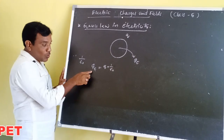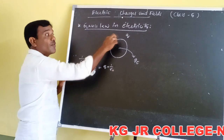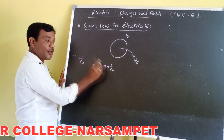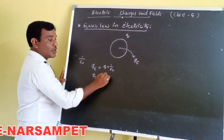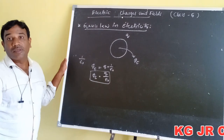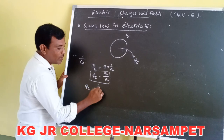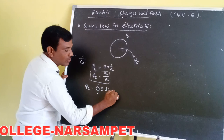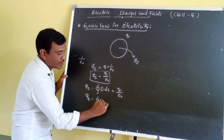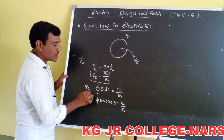The total electric flux passing through a closed surface is equal to (1/ε₀) times the net charge of the enclosed surface — this is Gauss's Law. The equation is: φ = Q/ε₀, where ε₀ is the permittivity of free space. In integral form: φ = ∮ E·dS = Q/ε₀, or ∮ E dS cosθ = Q/ε₀.